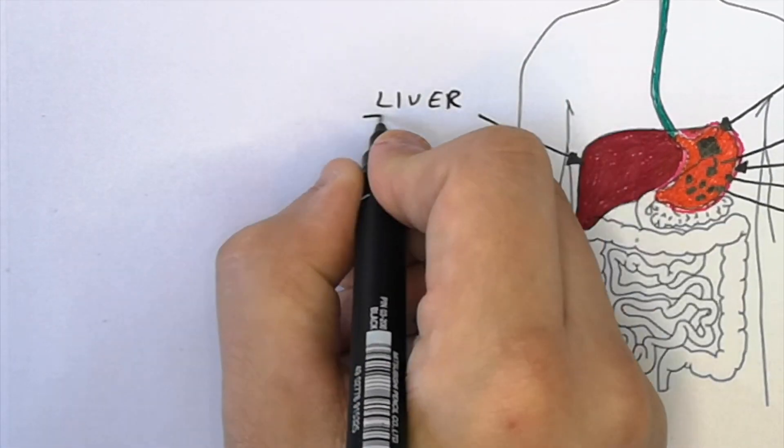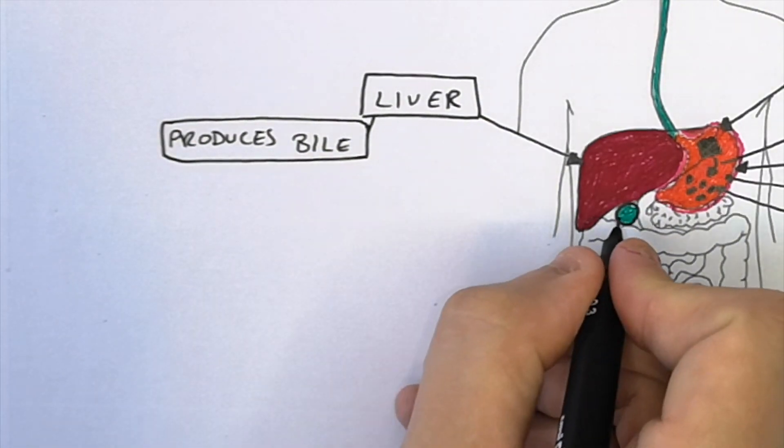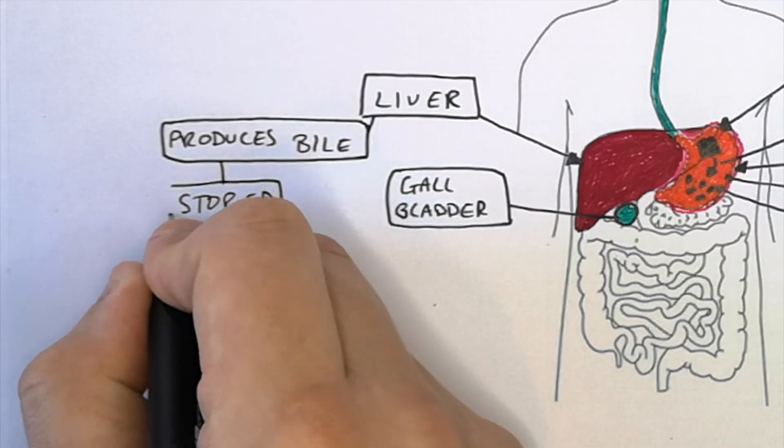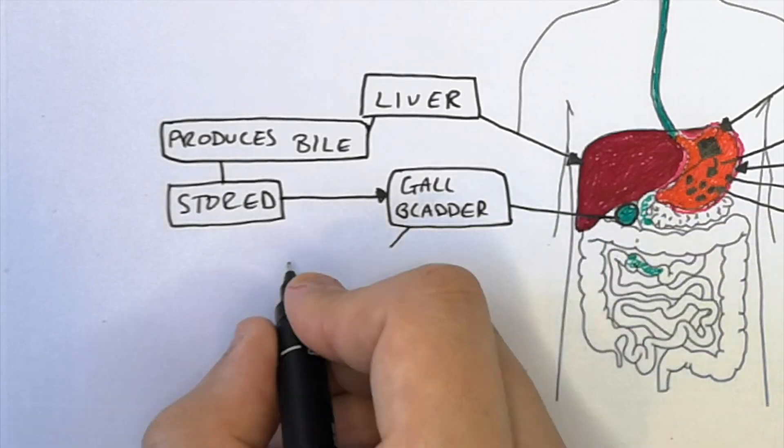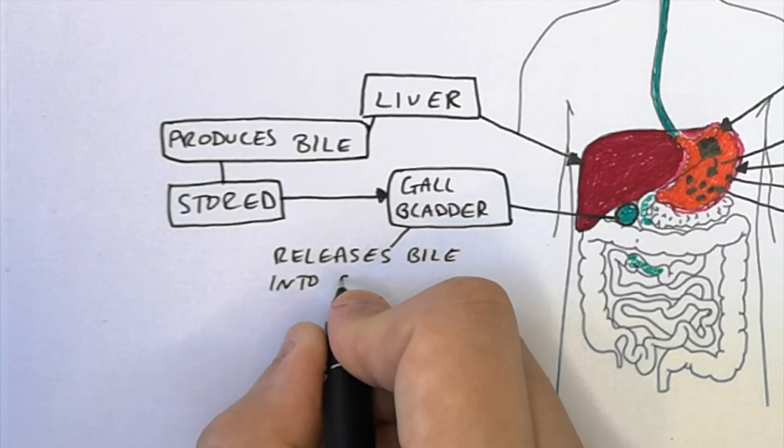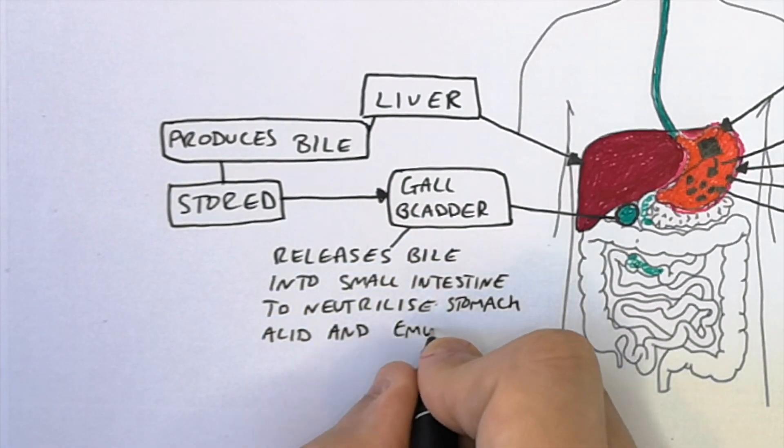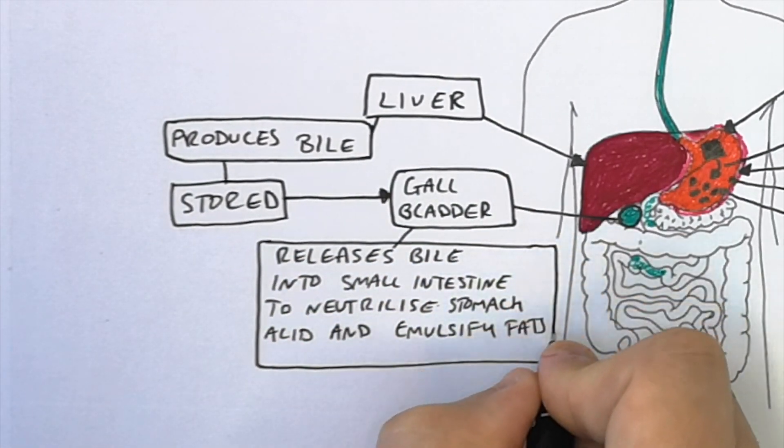The liver produces bile. Bile is transported to the gallbladder where it is stored. The gallbladder releases bile into the small intestine to neutralize stomach acid and emulsify fat droplets from large droplets into smaller droplets.